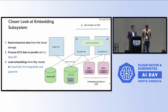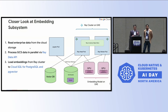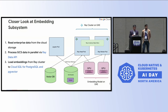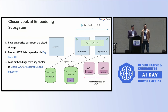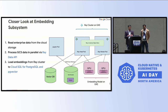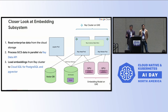Let's take a closer look at the embedding subsystem. On the right-hand side, there's a Ray cluster running on GKE with two parts: a head node and a worker node. Below that, you have your embedding model running on GPUs, deployed on potentially the same cluster. Your grounding dataset sits in the GCS bucket. The Ray cluster reads the data using GCS fuse, gets the dataset from the GCS bucket, breaks it into chunks, embeds each chunk, and stores that into the vector database.